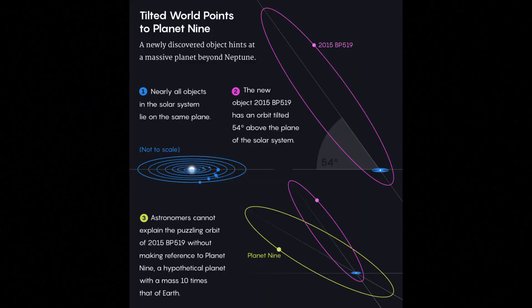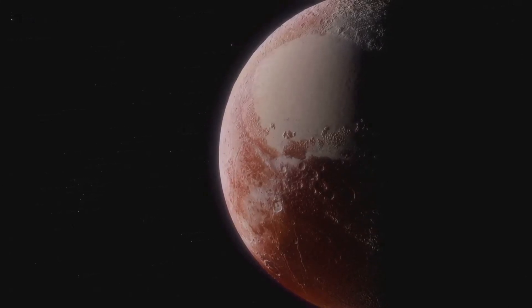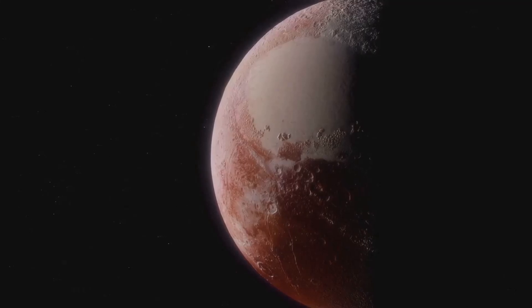At its closest approach, Planet Nine would still be approximately 200 astronomical units from the Sun. This immense distance and the planet's inherent darkness make it incredibly difficult to detect with current telescopes.